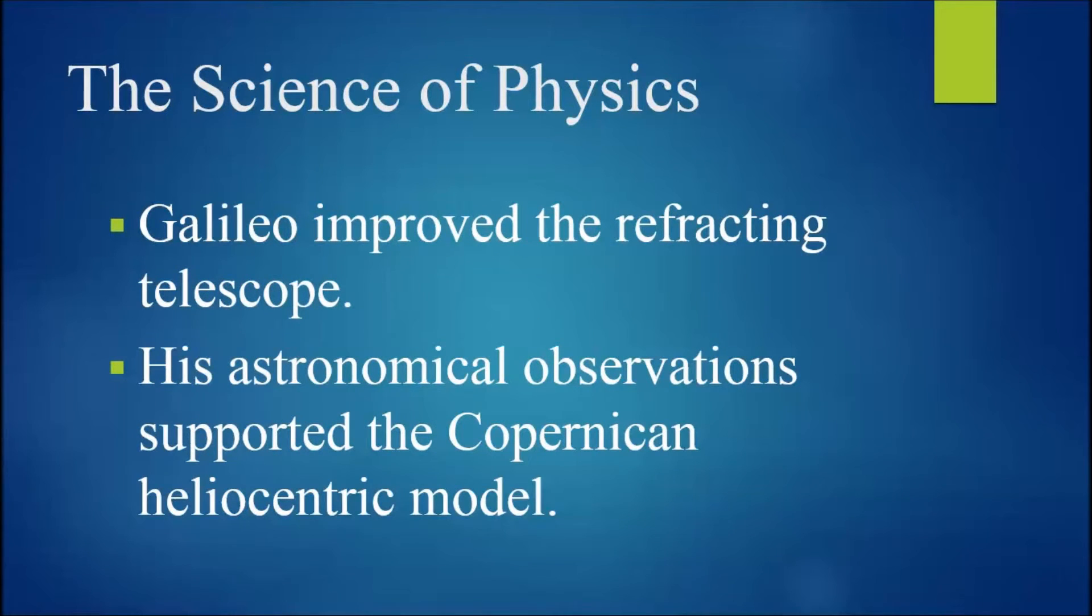Galileo improved the refracting telescope, and with his telescope made observations that supported the Copernican heliocentric model. In particular, Galileo observed that the planet Venus had phases very similar to the moon, and this suggested that the planet Venus, at least, orbited the sun rather than the Earth.